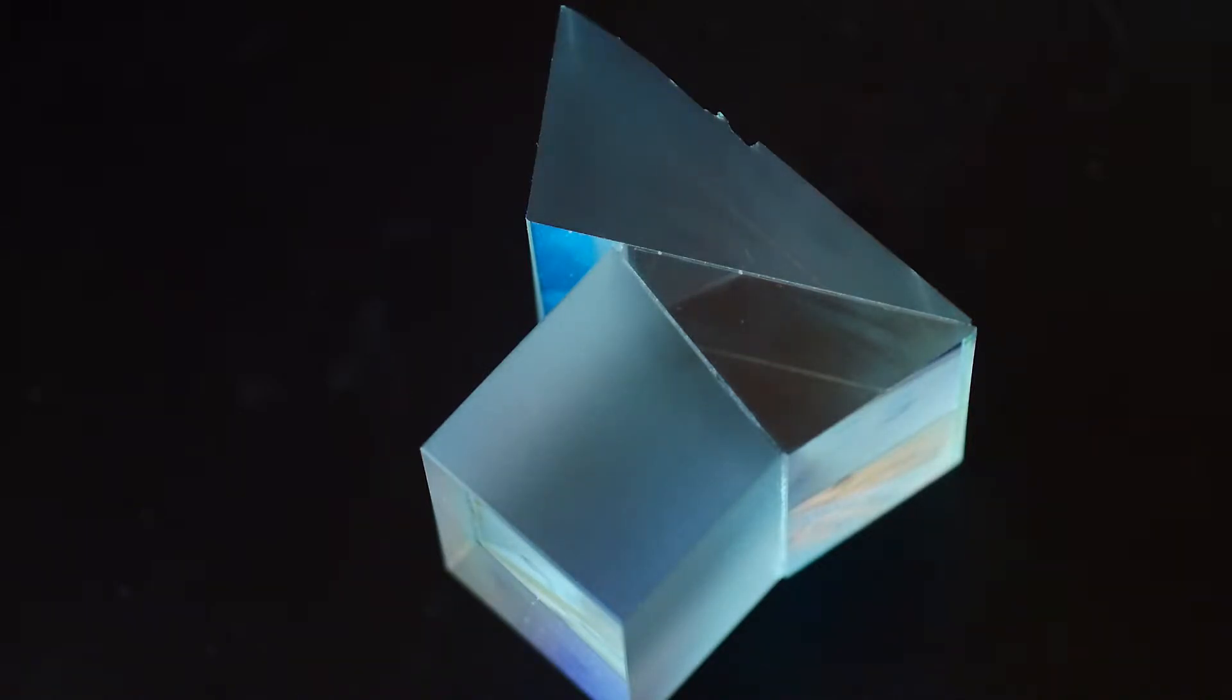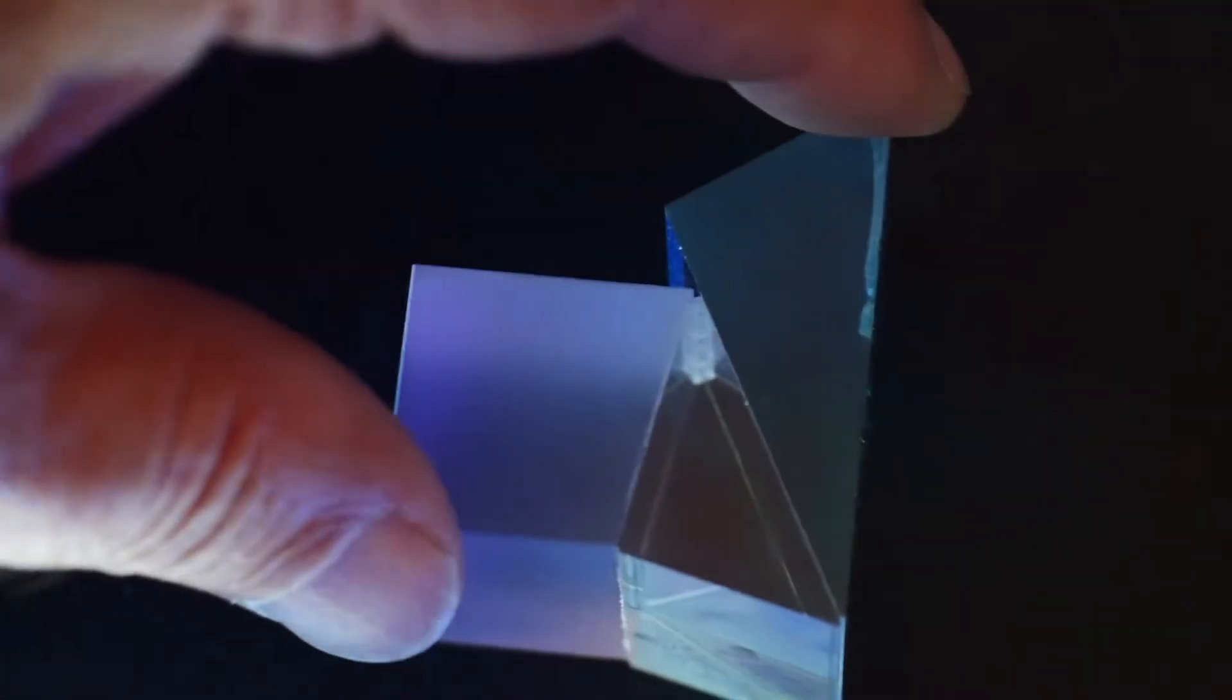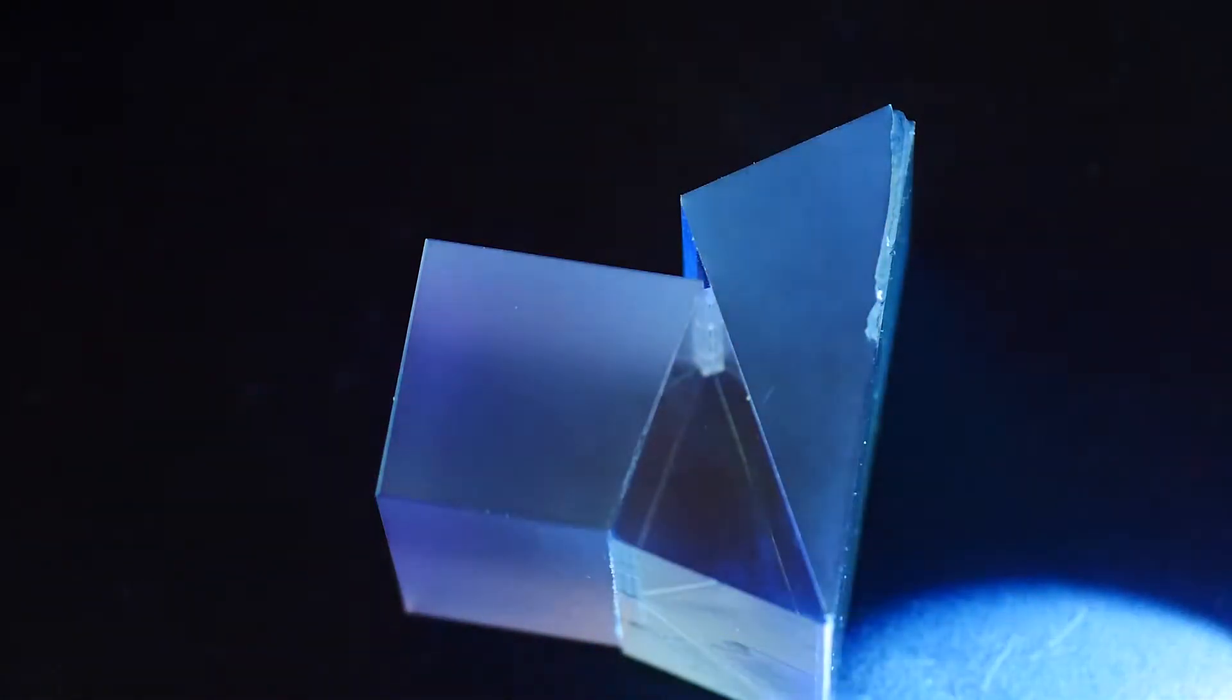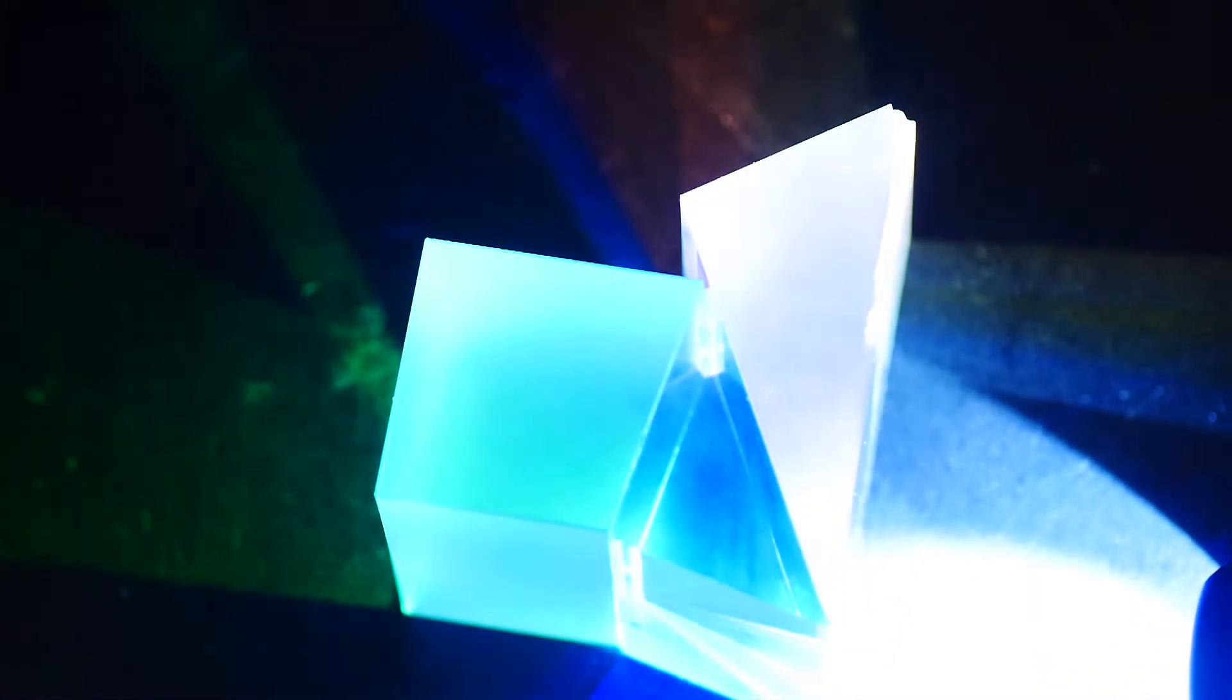And a lot of projectors work the opposite way. So LCD projectors, they'll have three LCDs, one for red, one for green, and one for blue. And they need to combine those into a full image, and they'll use one of these prisms to go the opposite way and create a prism.